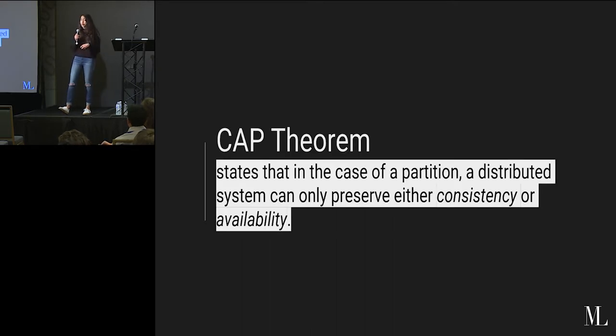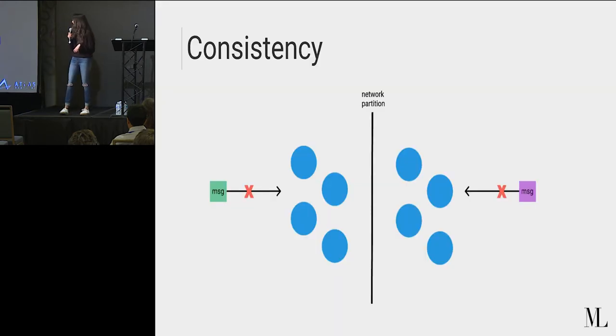So the CAP theorem, which stands for consistency, availability, and partition tolerance, states that in the case of a partition, a distributed system can only preserve either consistency or availability. So let's dive into what that means.